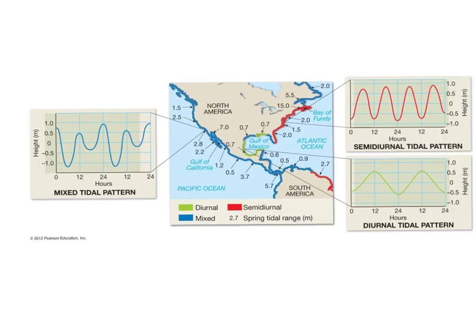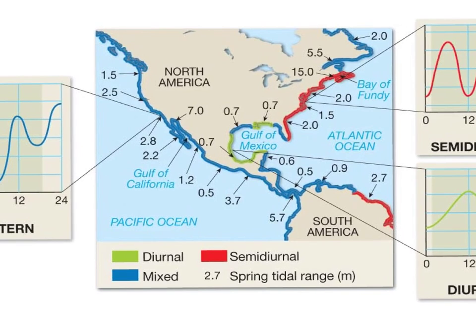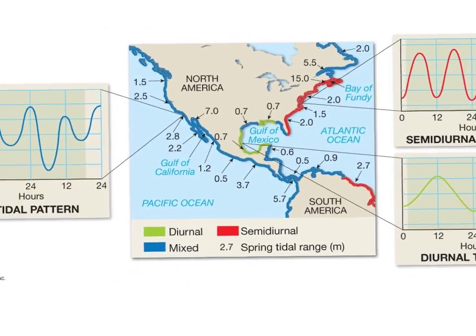Today we're taking a look at tides and in particular we're going to take a look at different tidal patterns. This particular diagram is right in your textbook. As you can see it shows North America and part of South America and the different types of tides found in different locations along the coastlines. It also gives you the tidal range in meters. Let's take a look at these different tidal patterns.